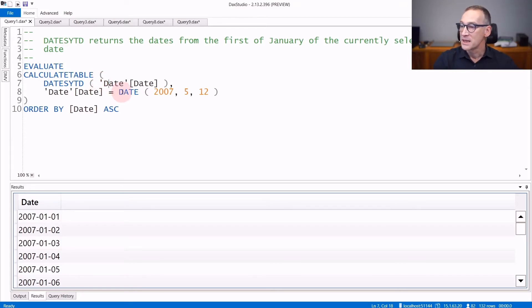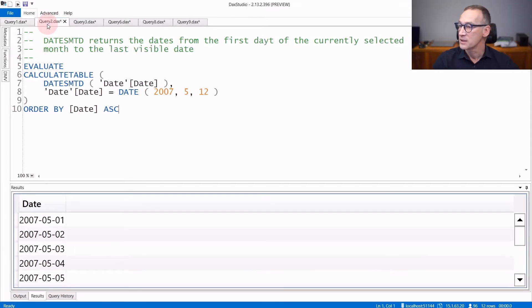In this first example, I set in the filter context the 12th of May 2007 and I compute the DatesYTD. The result contains all the dates starting from the 1st of January 2007 up to the 12th of May 2007. So all the dates between the 1st of January of the current year and the last visible date are included in the result set, which of course is a table because we will need to use it as a filter argument of CALCULATE.